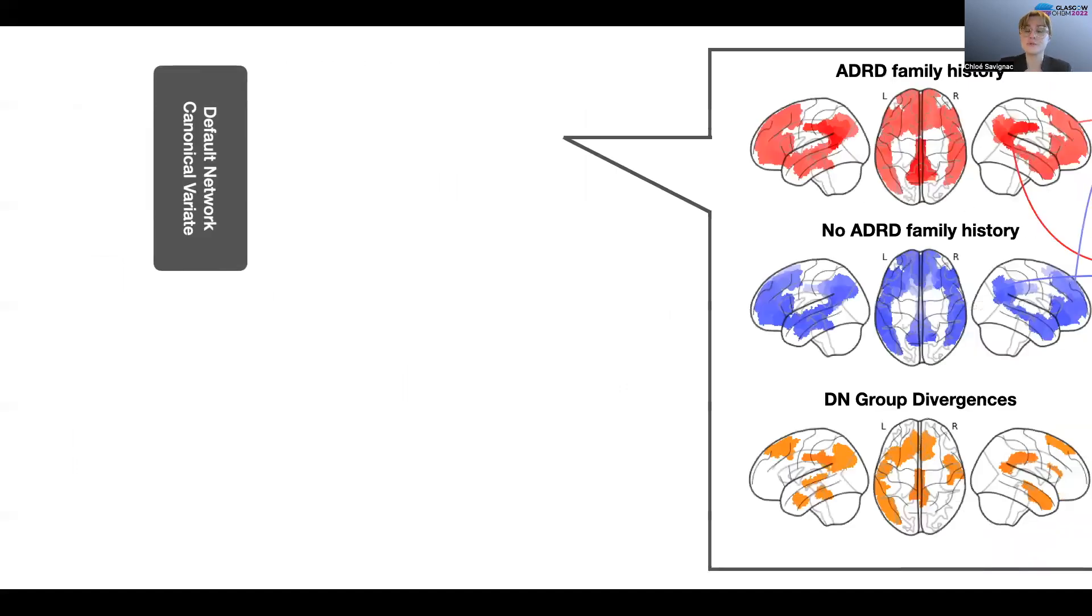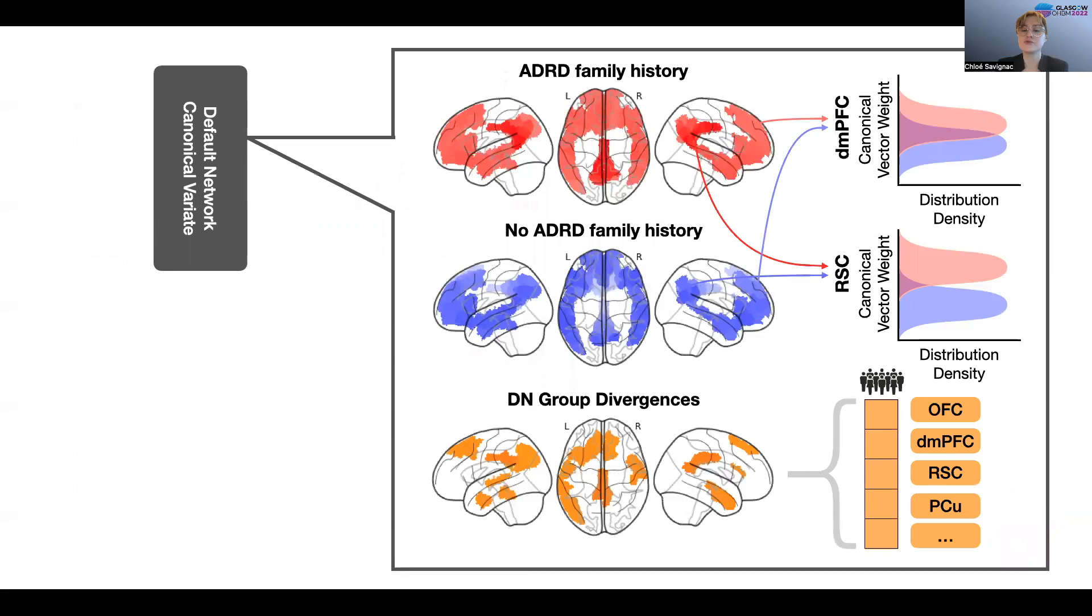Once we extract these population signatures, we can look at how each mode is differently expressed in relation to Alzheimer's disease risk. To do so, we perform a rigorous difference analysis to single out microstructural divergence in specific anatomical sub-regions with respect to Alzheimer's disease risk.